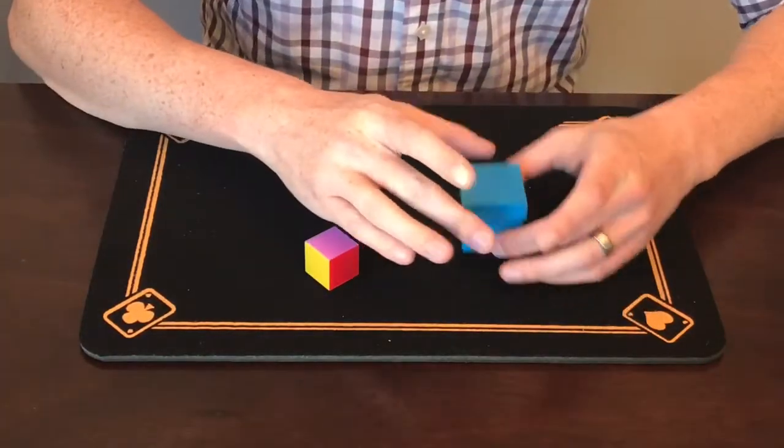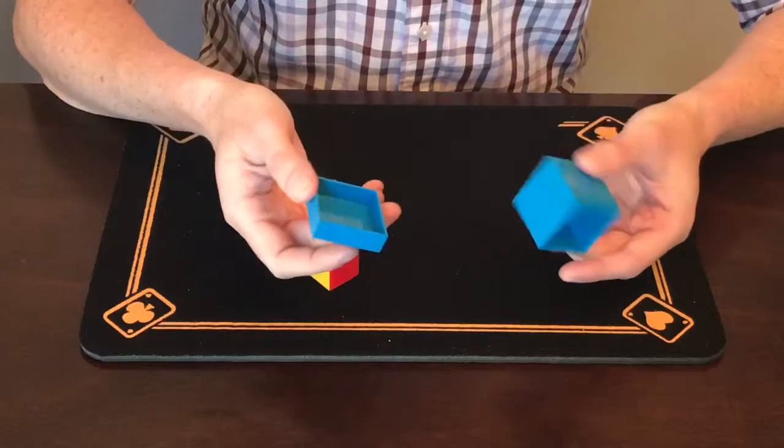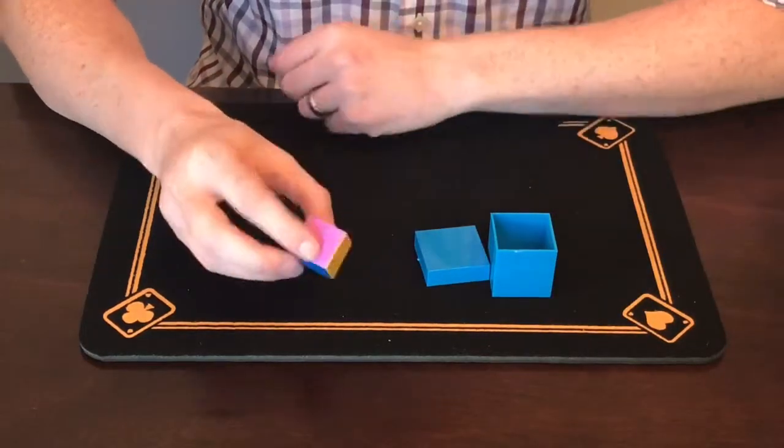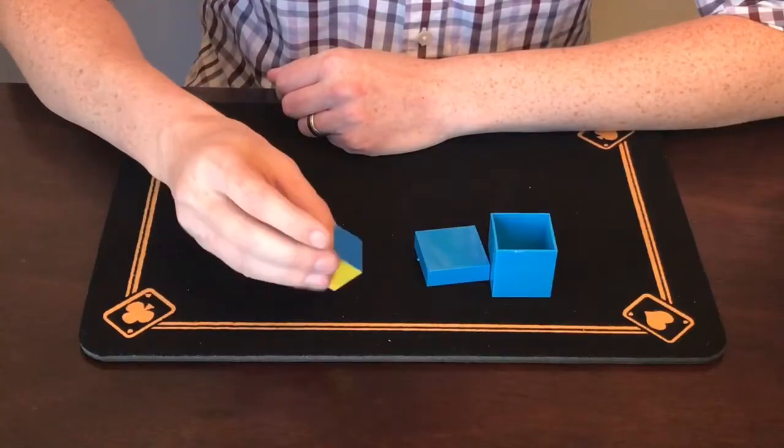So the way it works is I've got a plastic box here with a lid and a plastic cube with six different colors on it: red, orange, yellow, green, blue, and purple.